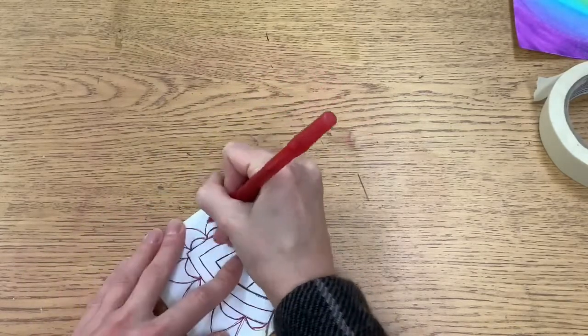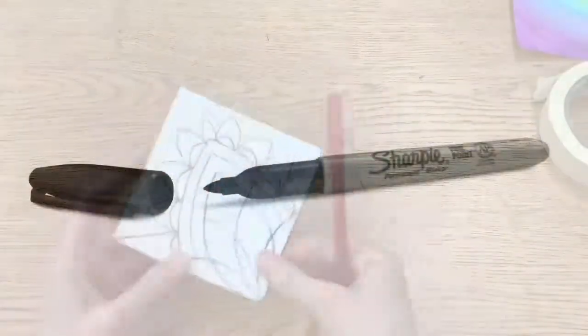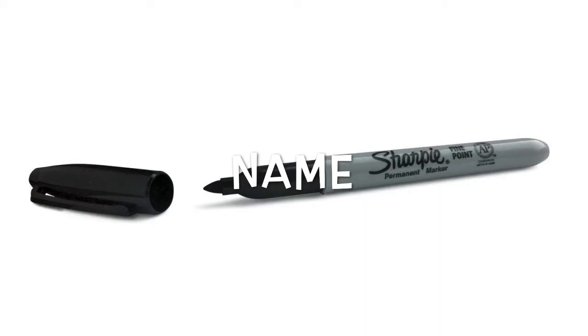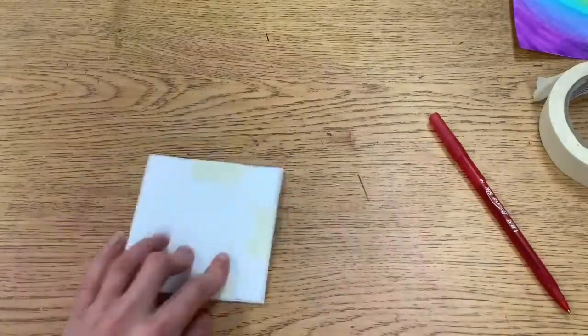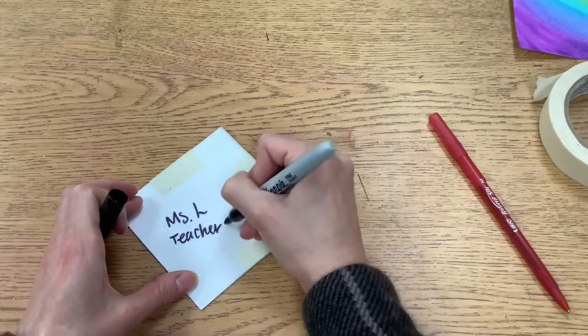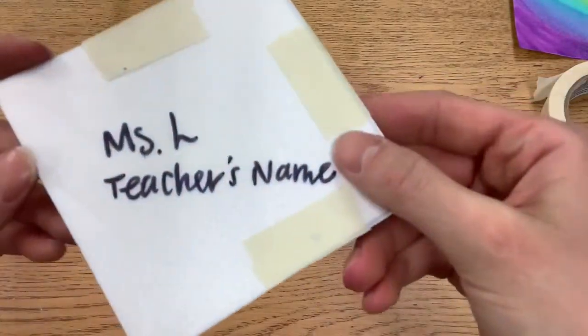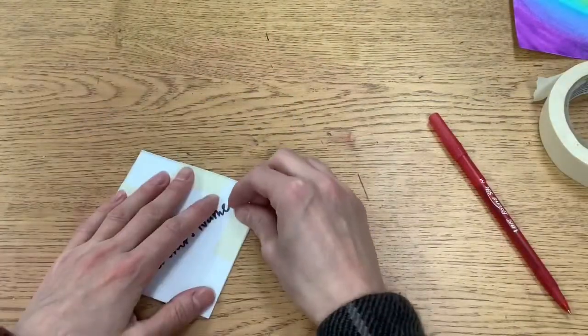Then we're going to put our name on the back of our printing plate with a Sharpie. We need to use a Sharpie so it will stay on our printing plate because Sharpie markers are permanent. Write your name and your teacher's name on the printing plate, and then you're ready to take the tape off.